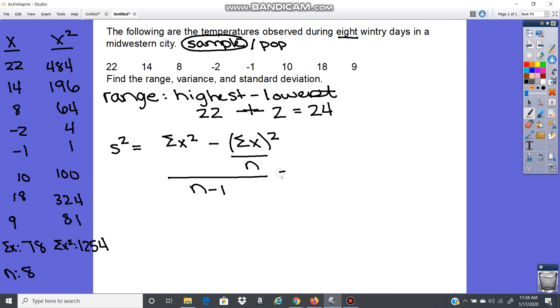We have everything we need to plug into the formula. Our sum of x squared is 1,254, and the sum of x was 78. I'm going to need to square that, but I'll leave it there for now. My n is 8, and that's going to be over 8 minus 1.